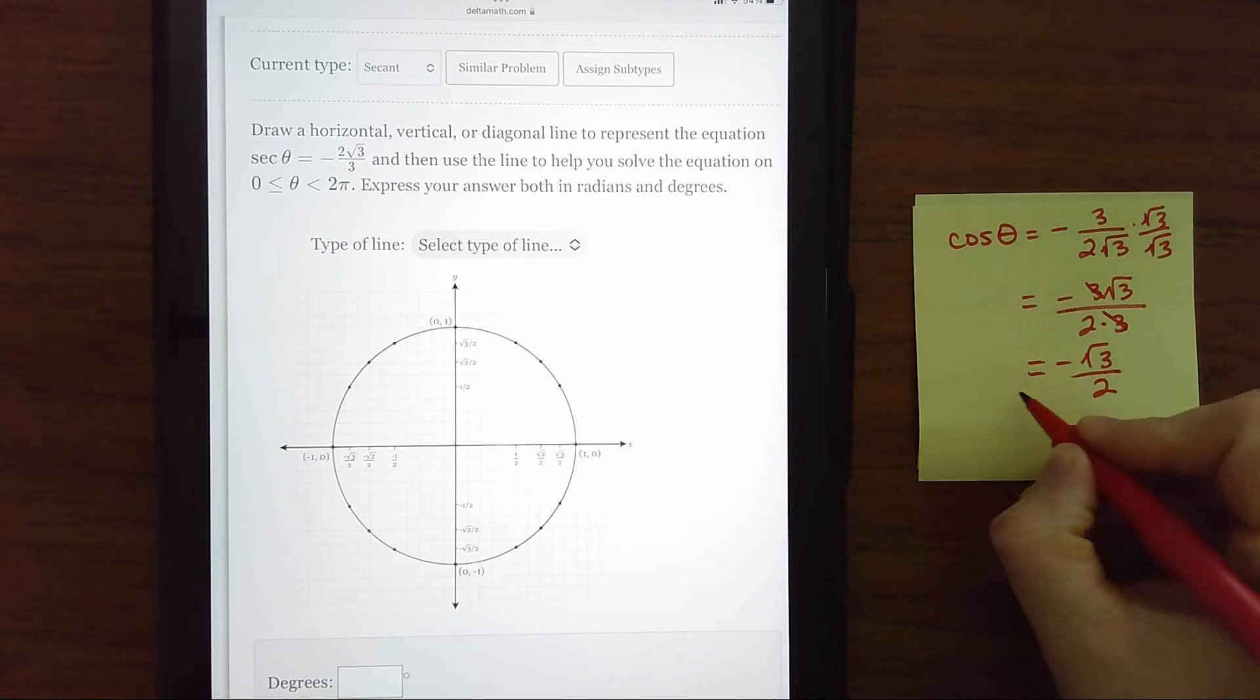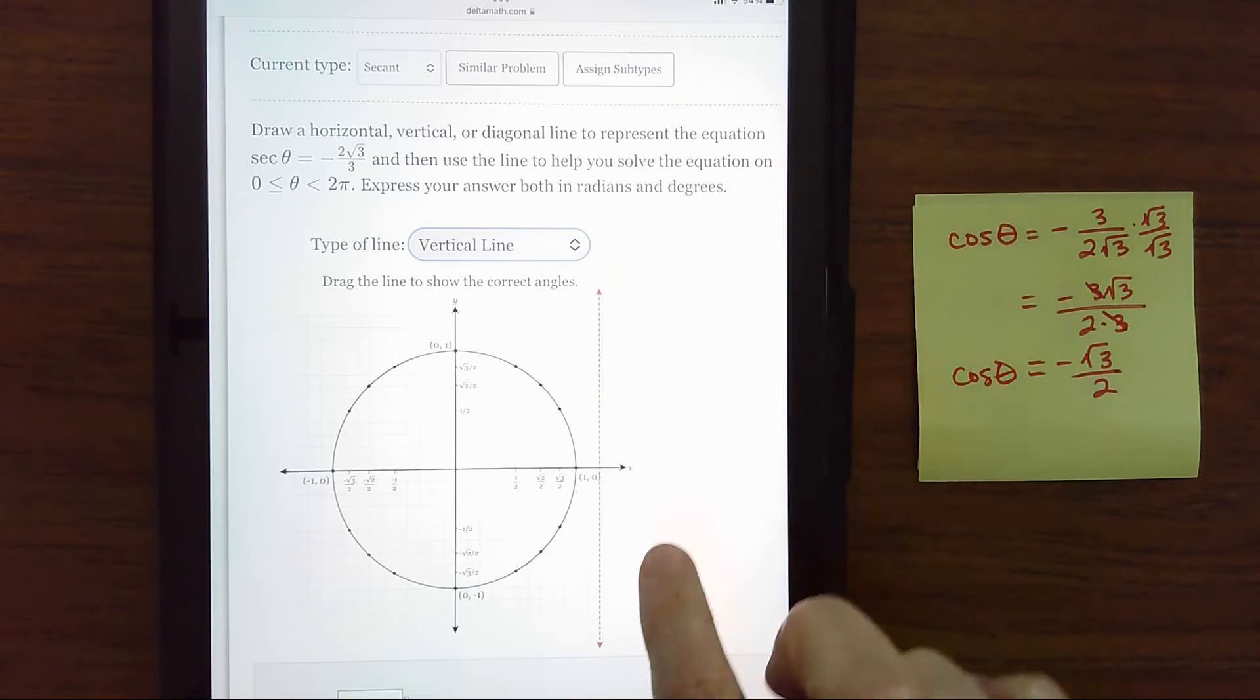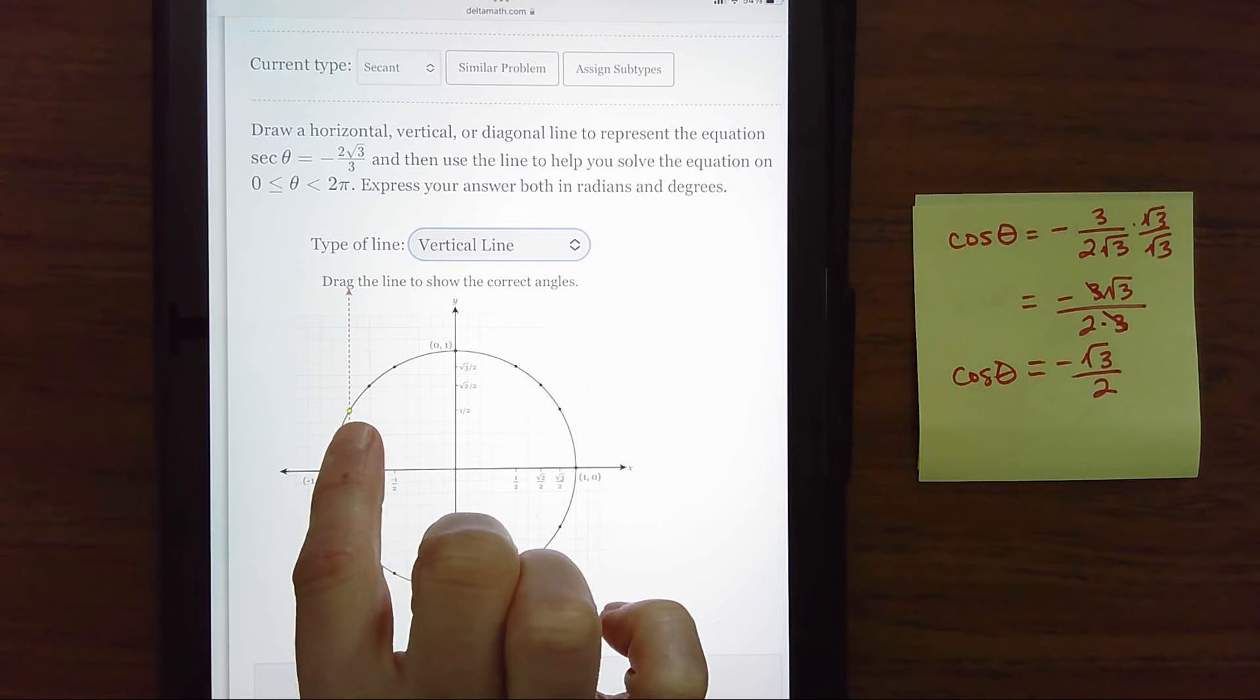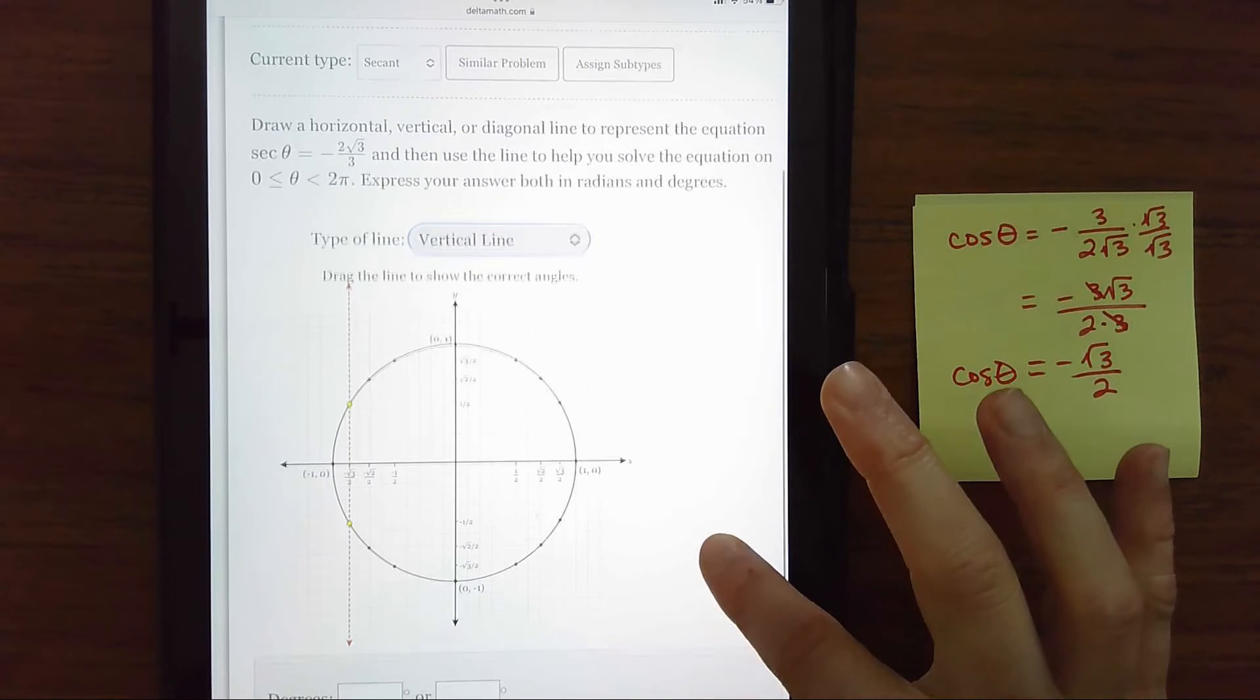Cosine, remember that is x values. And when it's x equals a number, it's a vertical line because it goes through the x-axis. We want to be negative, and cosine is negative when x is negative back here in quadrants two and three. And so since it's on a unit circle,